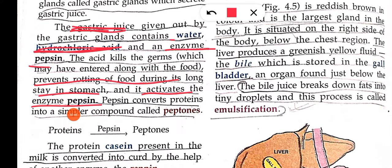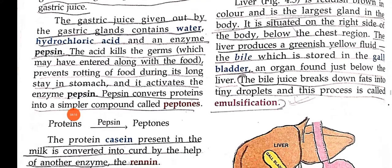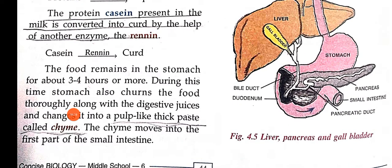The enzyme called pepsin converts protein into peptones. So the work of pepsin in the stomach is to convert protein into peptones. Another enzyme, rennin, converts the protein casein present in milk into curd.